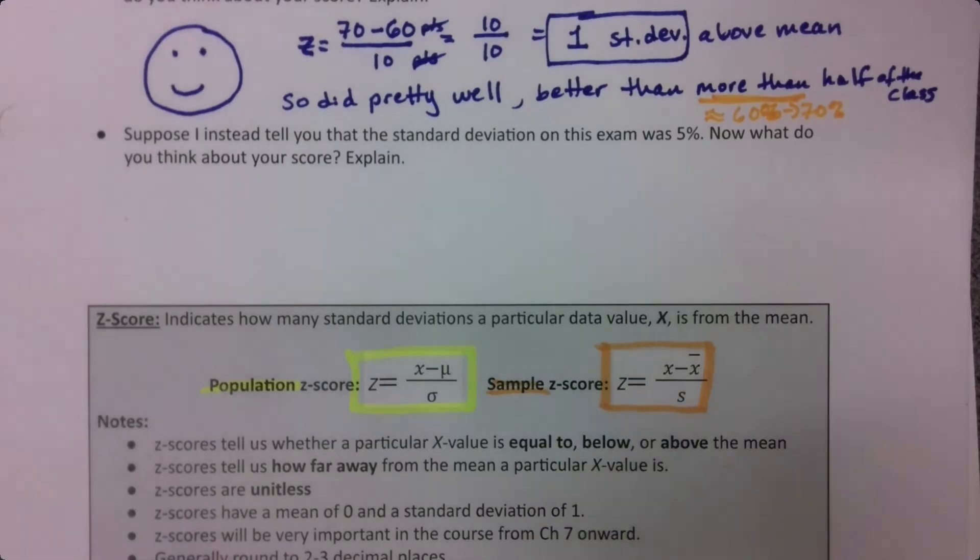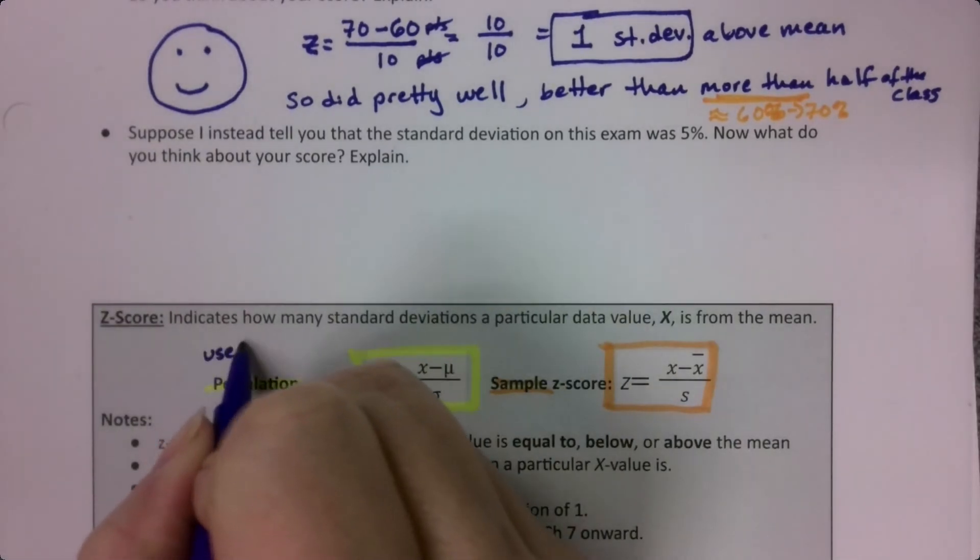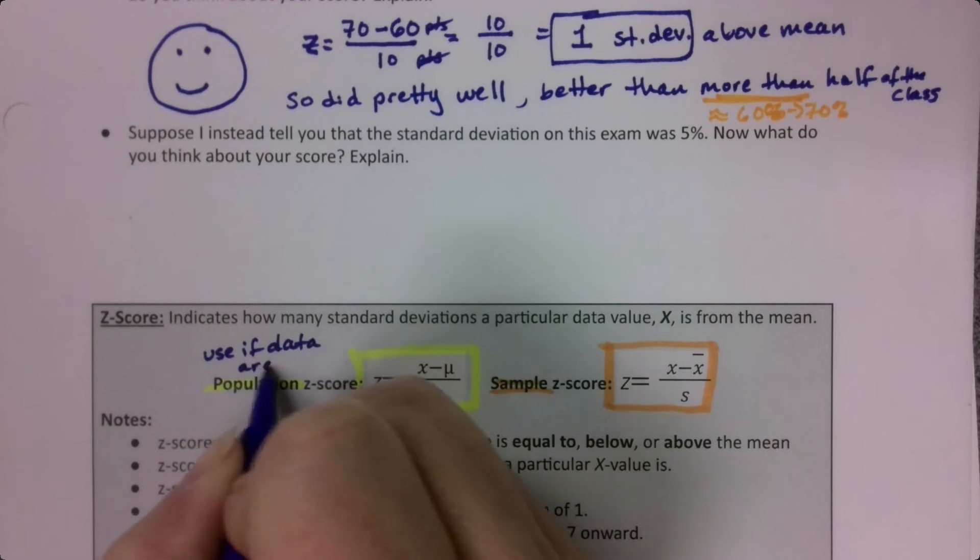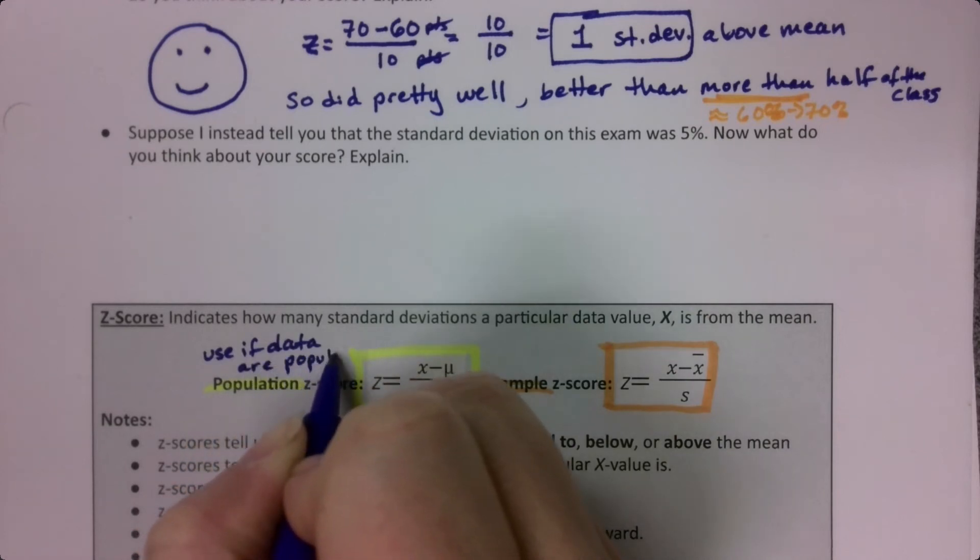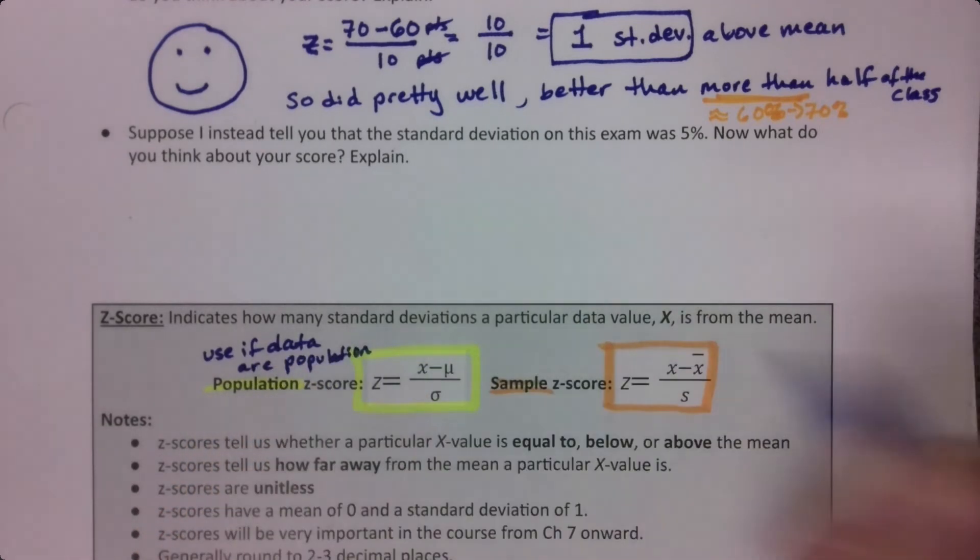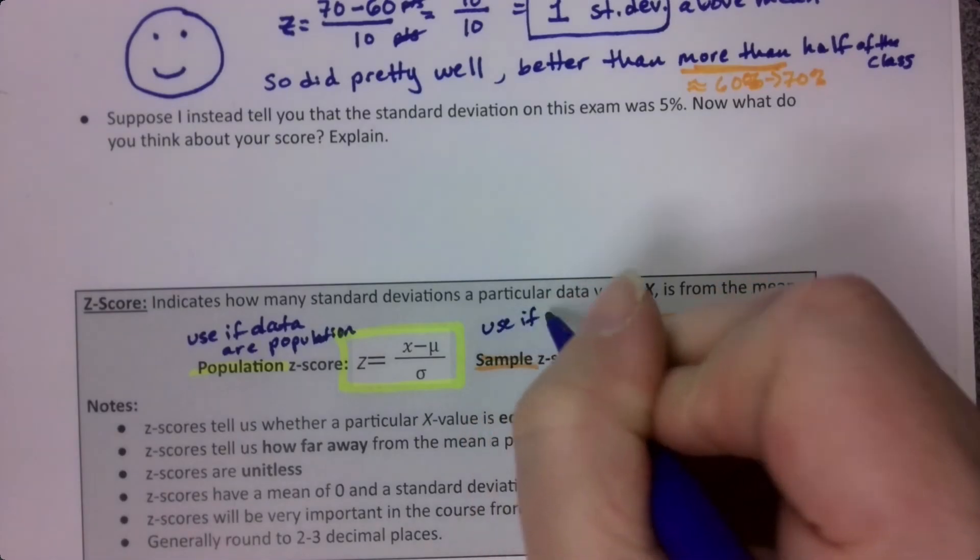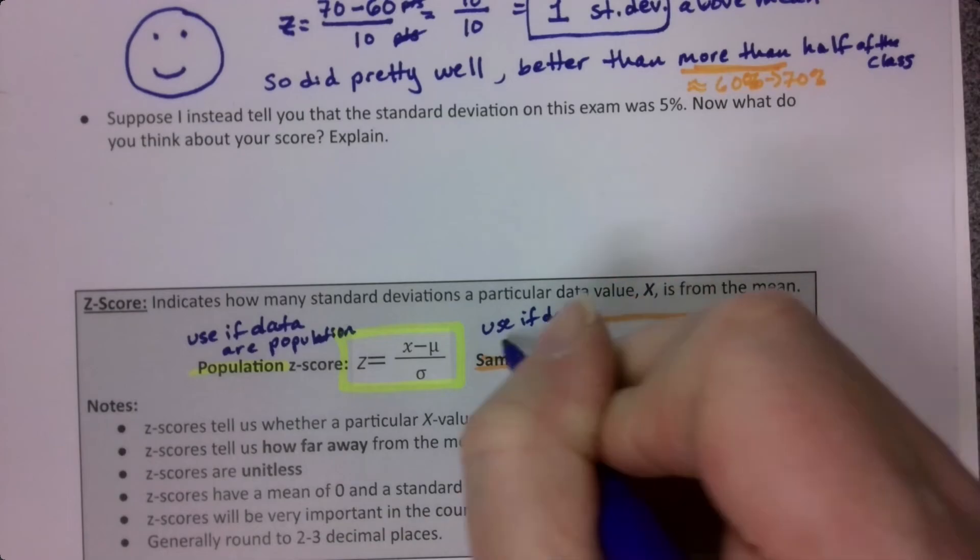So we'll use this one if data are a population, which doesn't happen too often, at least in this chapter. It will happen to us in chapter seven, believe it or not. And then use if the data are a sample, which is more likely at this point.